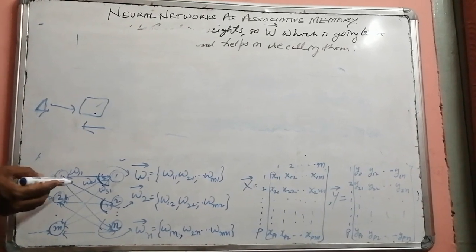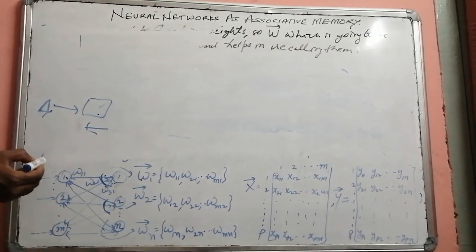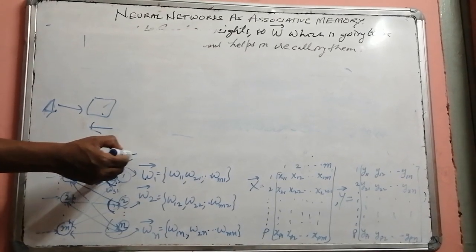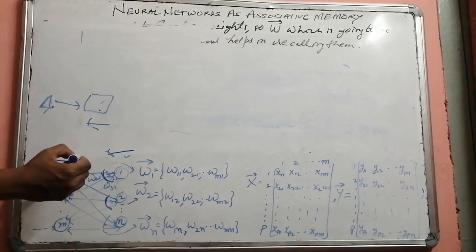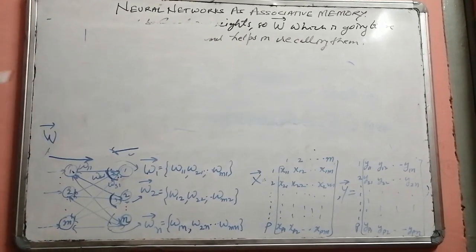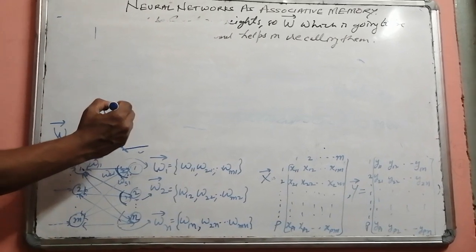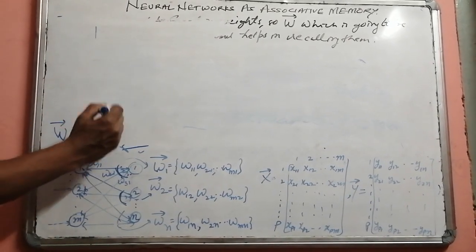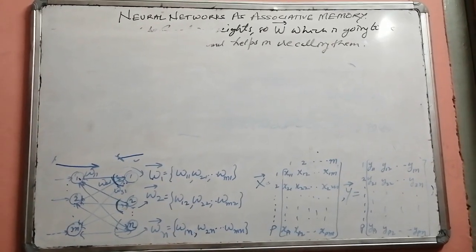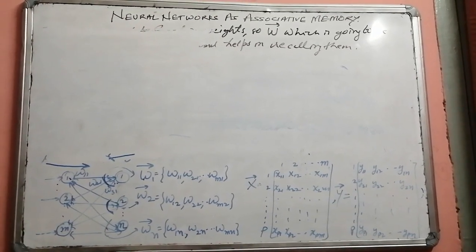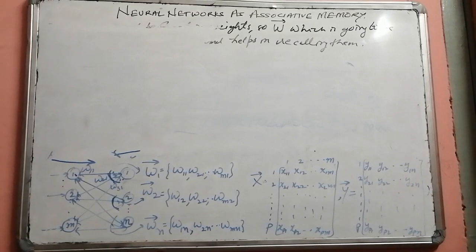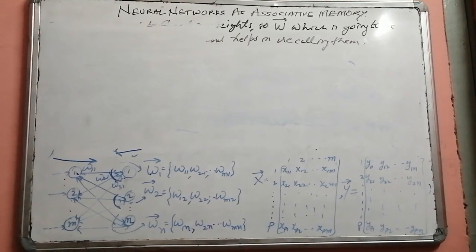While extracting the output pattern corresponding to an input, we go in the forward direction. While extracting the input from a given output, we go in the reverse direction. In bi-directional associative memory, if the weight matrix in the forward direction is W, then in the reverse direction the weight matrix becomes its transpose W^T. In the next lecture, we will trace examples of auto-associative, hetero-associative, and bi-directional associative memories, including a worked example of BAM.